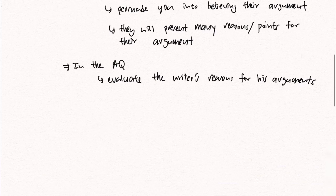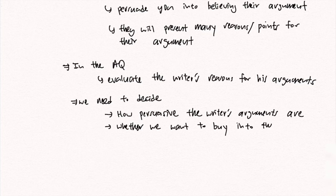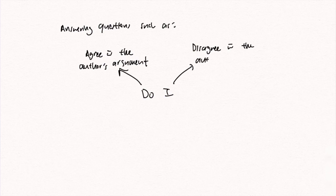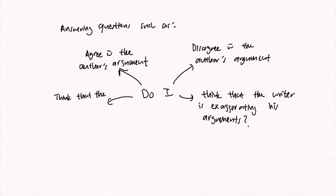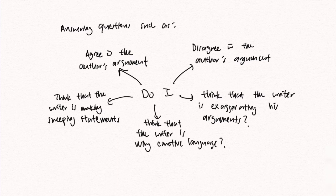Anyone can write an article on any topic — even I can write an article tomorrow about why A-levels shouldn't exist. Ultimately, the responsibility lies on the reader to evaluate the writer's arguments and decide how persuasive they are, and whether we want to buy into them. As you write the AQ, you will be answering questions such as: Do I agree or disagree with the author's argument? Do I agree with one argument but disagree with another? Do I think the writer is exaggerating, making sweeping statements, or using emotive language? These are some questions to ask yourself, though the list is not exhaustive.